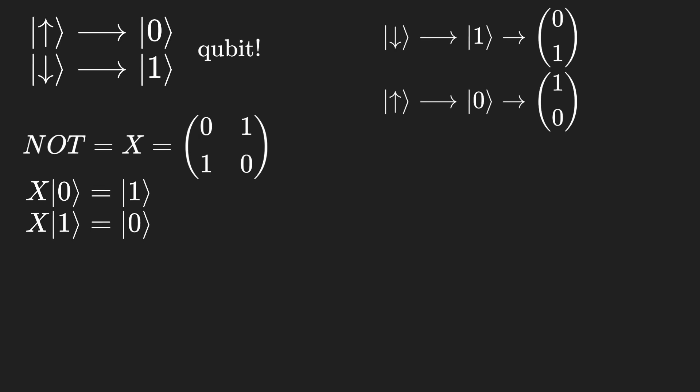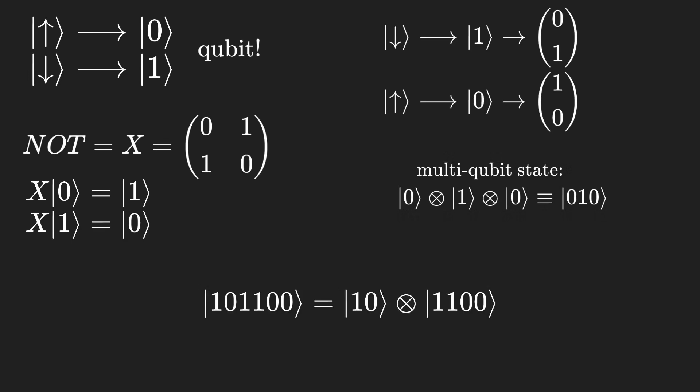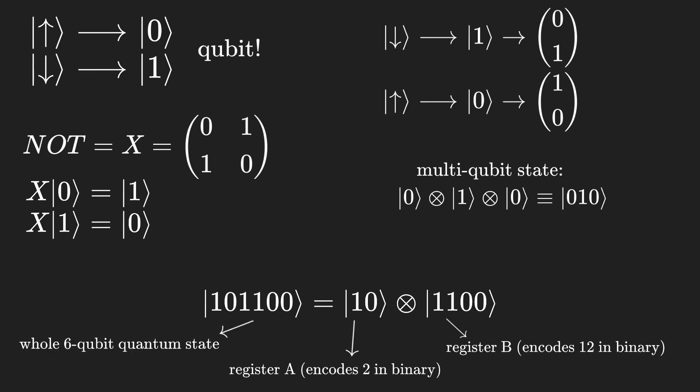What about multiple qubits? We just combine the underlying quantum systems and work with them together. Some qubits of a multi-qubit state may be used to represent a certain number, the same way a 16-bit sequence may be used to encode two 8-bit numbers in a computer. These are known as quantum registers, analogous to classical registers in classical computing.